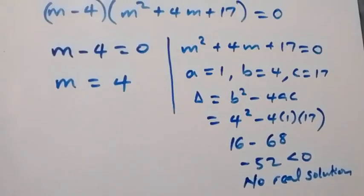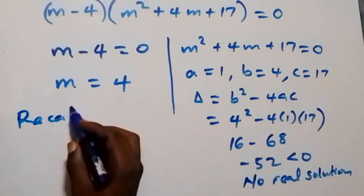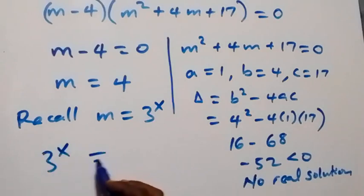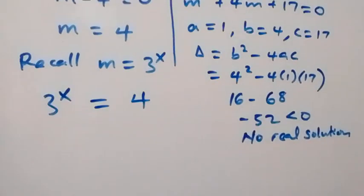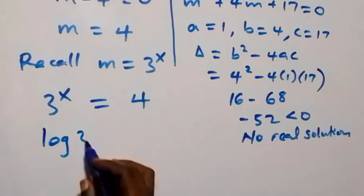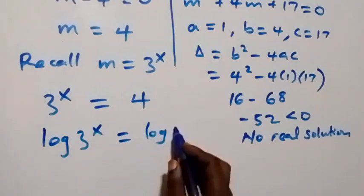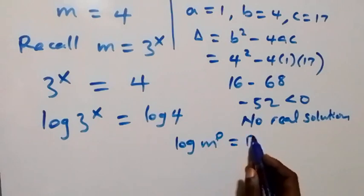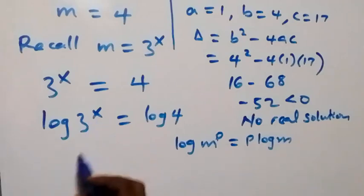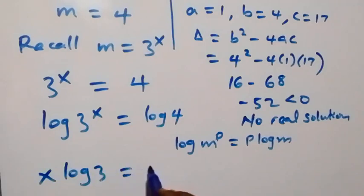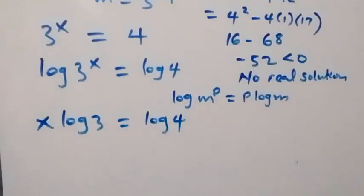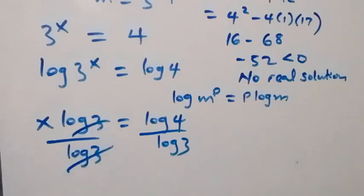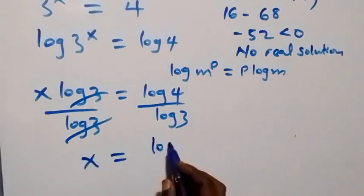From the other case, m = 4. Recalling that m represents 3 raised to power x, this implies 3 raised to power x equals 4. Taking the log on both sides, we have log(3^x) = log 4. By the power rule of logarithms — log m raised to power p equals p·log m — x is the power, so we get x·log 3 = log 4. Dividing both sides by log 3, we have x = log 4 / log 3.